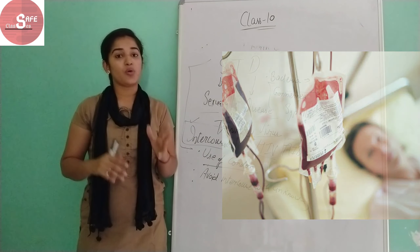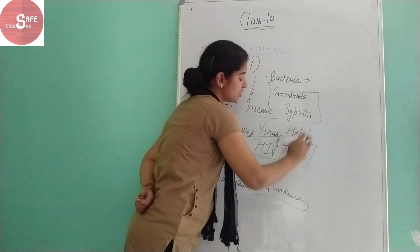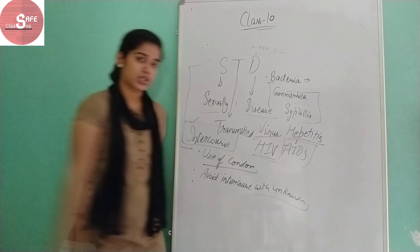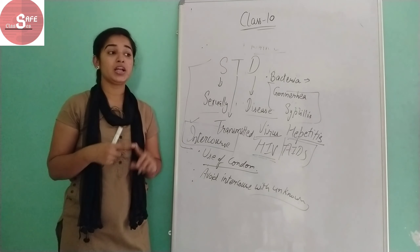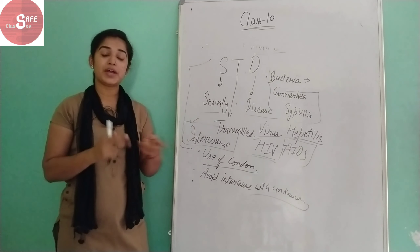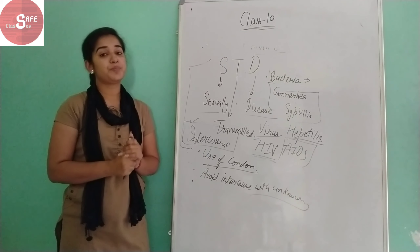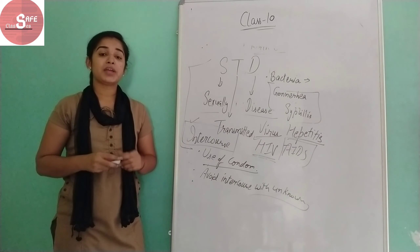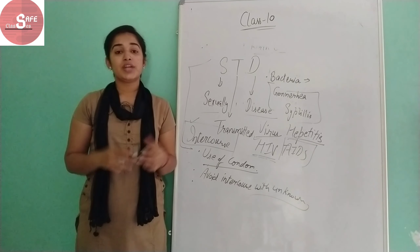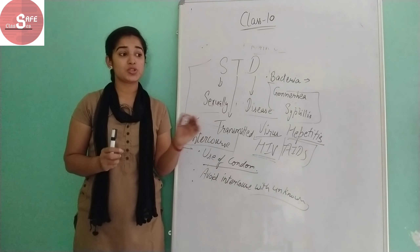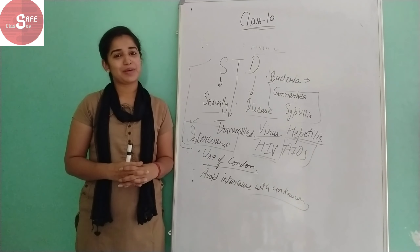Another sexually transmitted disease is hepatitis. So that's what we have studied today: methods of birth control — why they are important — and the precautions and prevention of STDs. This chapter is reproduction in organisms. We will start the next chapter in the next class. If you have any problems with this chapter, write in the comment section. If you liked this video, please like, share, and subscribe to my channel. Thank you.